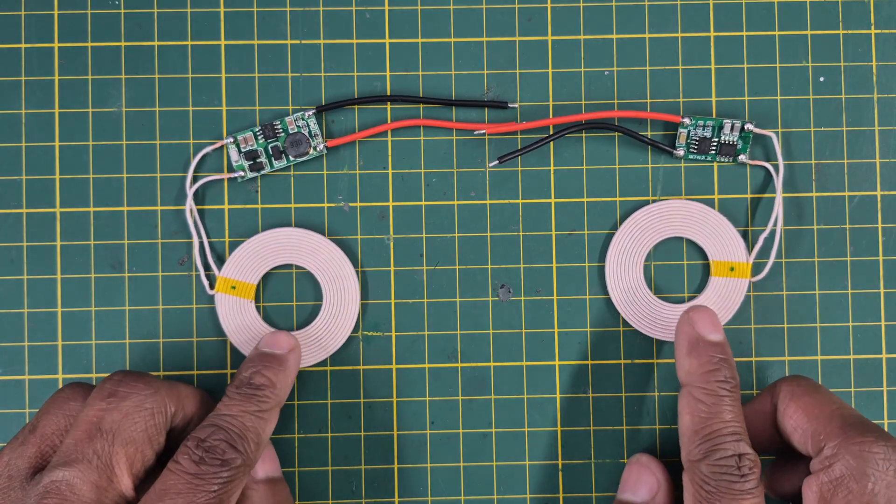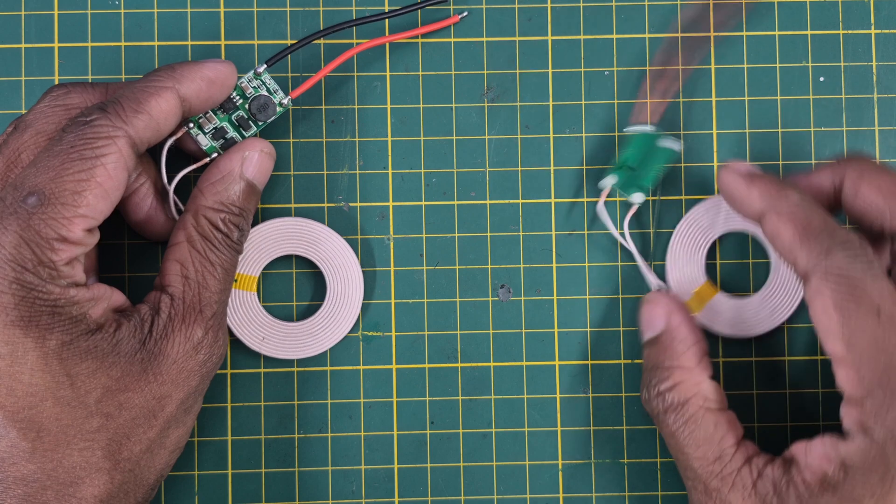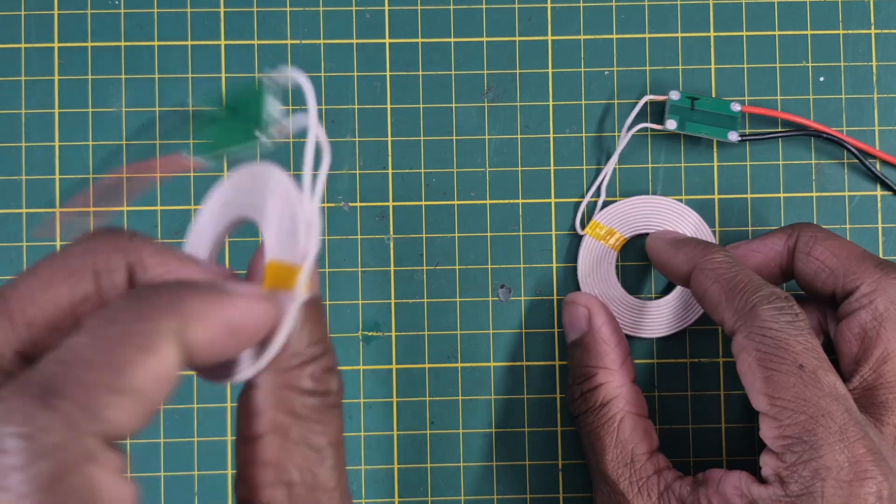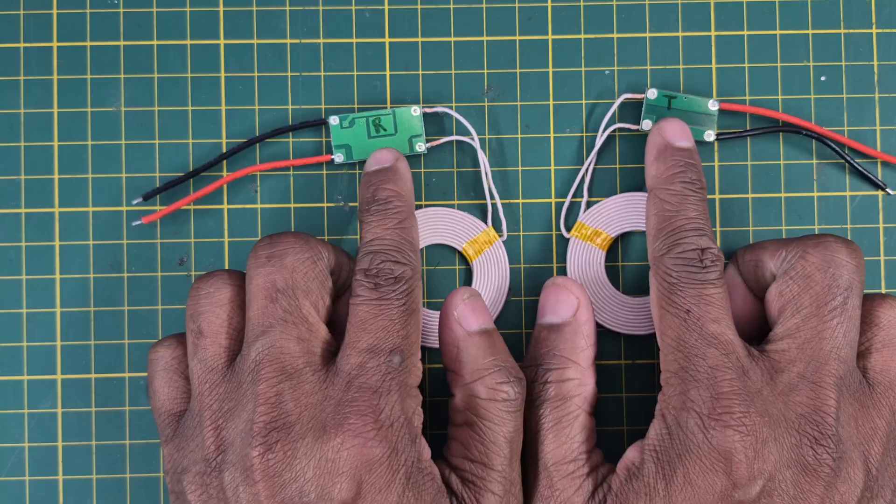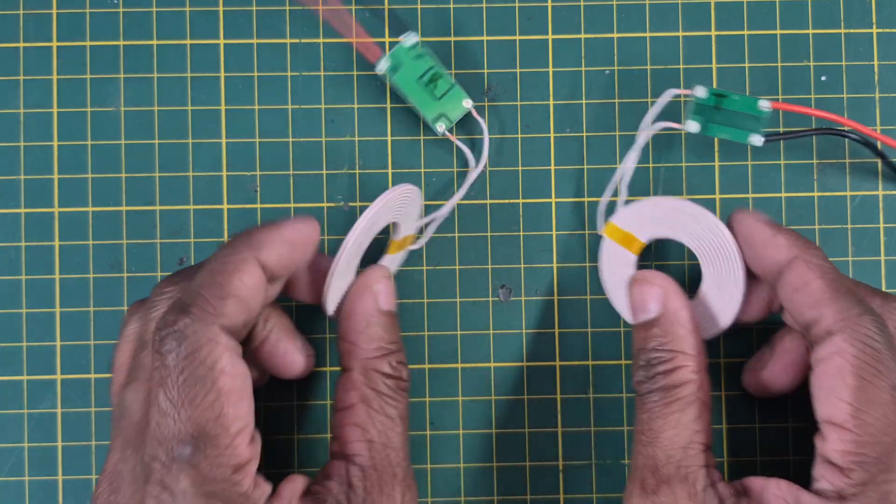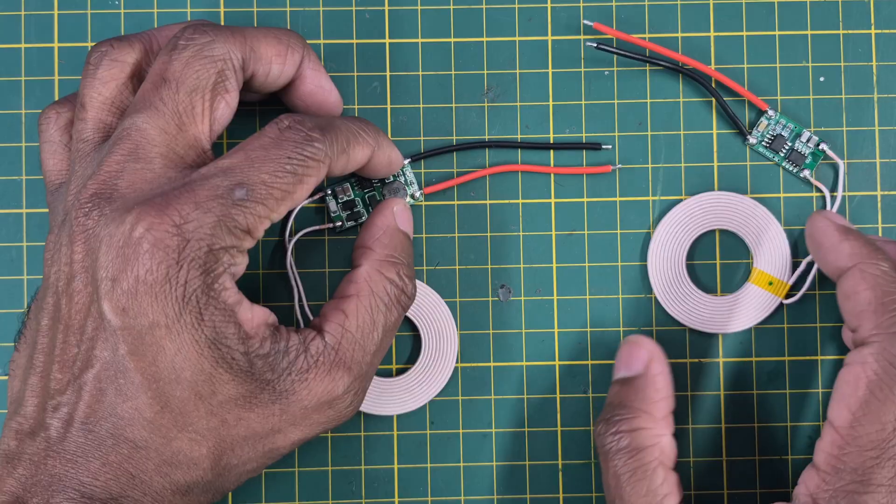These two modules look the same but the circuits are different. I have mentioned here this is the transmitter and this is the receiver so that there could not be any confusion.